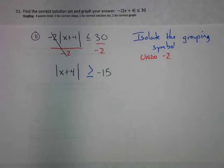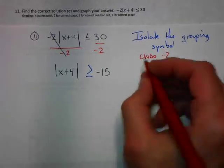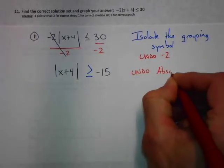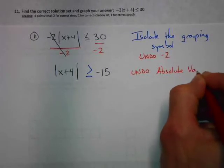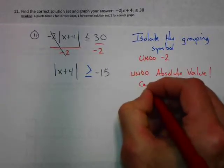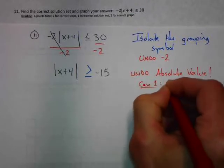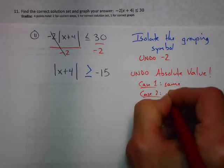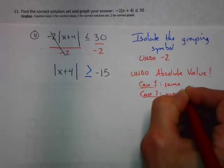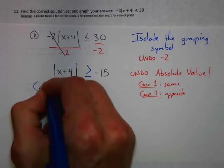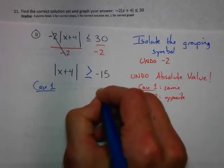Now our grouping symbol is isolated. We have to undo absolute value, which is very similar to number 10. How do we undo absolute value? Case one: what's inside stays the same. Case two: what's inside is the opposite. We're going to build case one and case two.